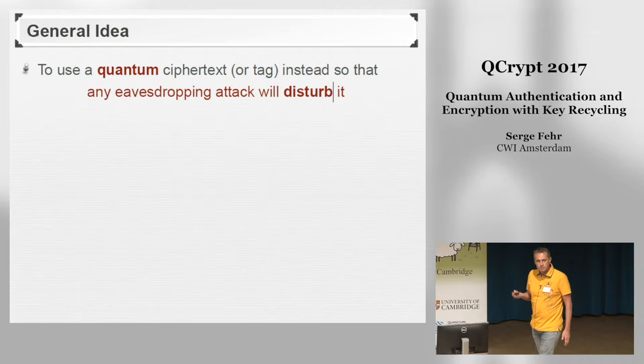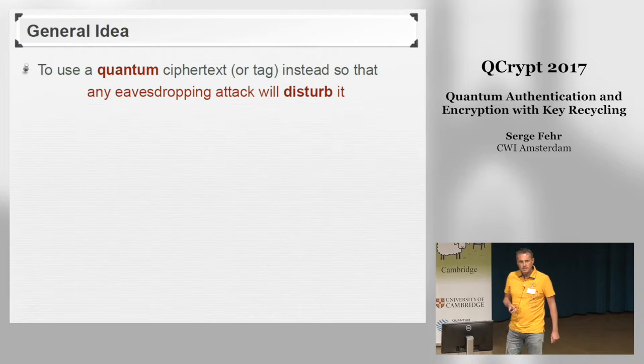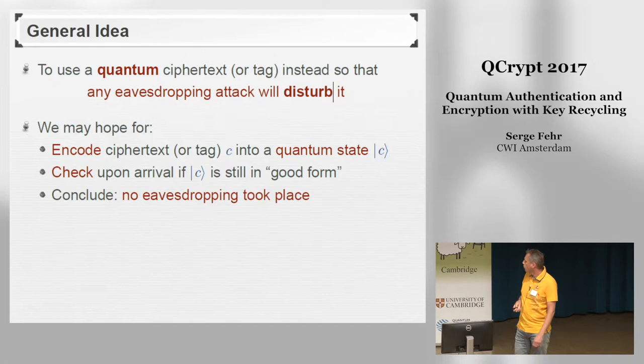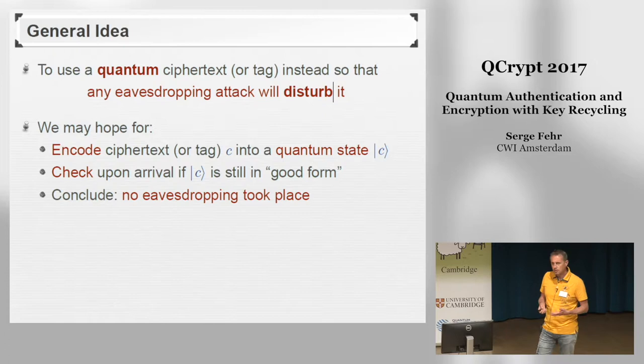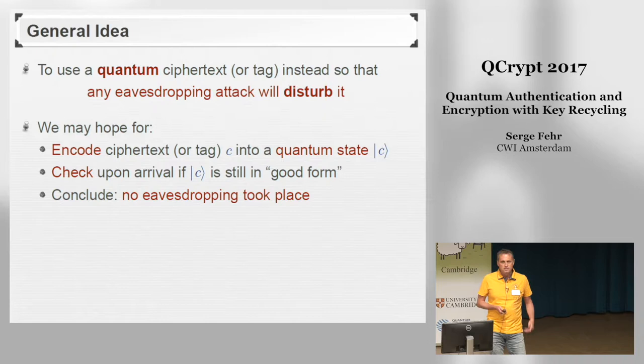This changes a bit if you go to the quantum setting, because if you think of a quantum ciphertext, by fundamental properties of quantum mechanics, any eavesdropping attack will disturb the state. So we may hope for a scheme where we encode the ciphertext into a quantum state, which we can then check on arrival — if it's still in good form — and if it is, to conclude that no eavesdropping took place and so the key is still safe to use again.